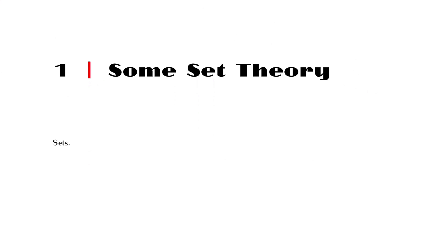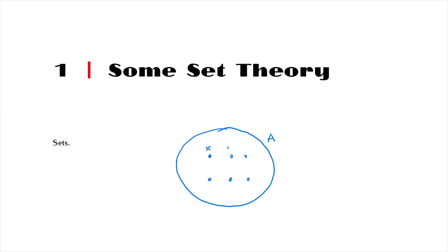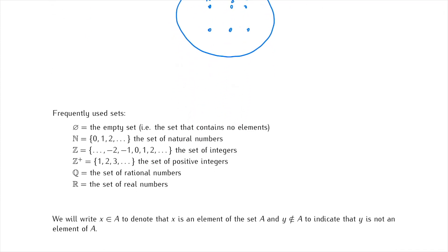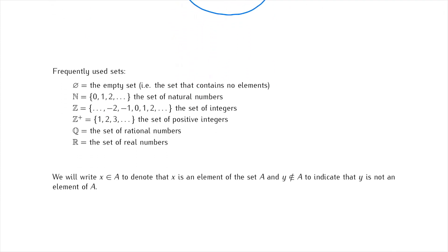Starting from the beginning: a set is simply a collection of some objects, the elements of the set. I will usually be denoting sets by capital letters — so let's say this is set A — and elements of sets will be denoted by lowercase letters, so this is element x, this is element y, this is element z. Some sets will appear in this course over and over again, so let's go through a list of those commonly used sets and fix the notation for them.